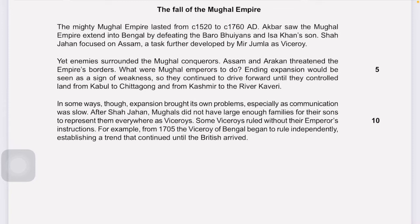Enemies surrounded the Mughal conquests — Assam and Arakhan threatened the Empire's borders. Ending expansions would be seen as a sign of weakness, so they continued to drive forward until they controlled land from Kabul to Chittagong and from Kashmir to the river Kaveri. These extensions were done by Aurangzeb. Expansion brought its own problems, especially as communication was slow.